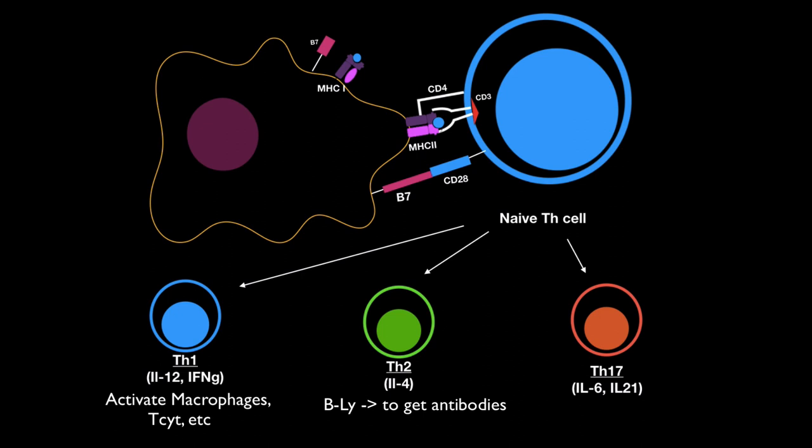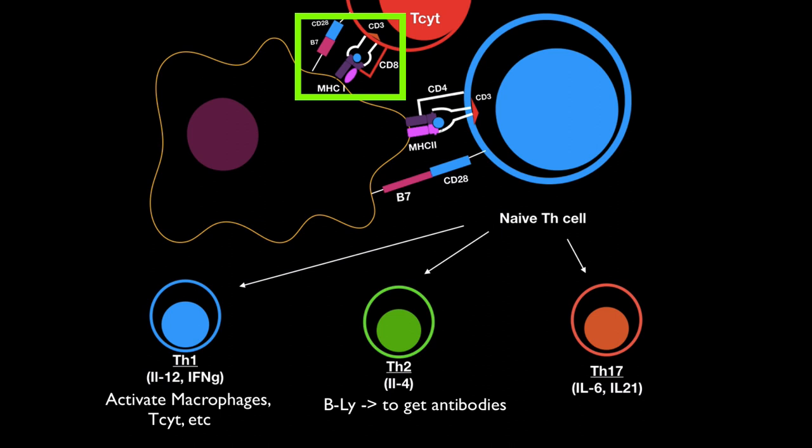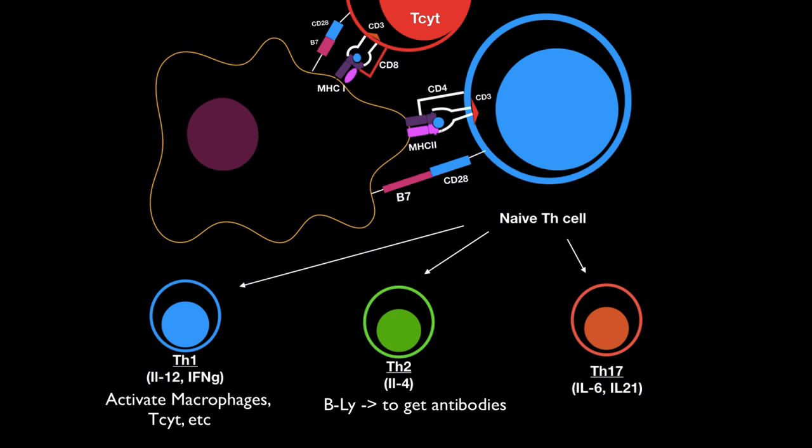It can also activate T-cytotoxic cells, because these cells are very specific in binding MHC class 1 via their CD8. They will activate CD3, which sends a positive signal to the T-cytotoxic cell — that's the first signal. The second signal is B7 to CD28. The third signal is usually interleukins from T-helper cell 1, which help it further differentiate into an effector T-cytotoxic cell.